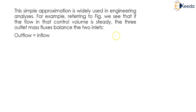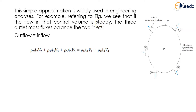This simple approximation is widely used in engineering analysis. For example, referring to the figure, if the flow in the control volume is steady, the three outlet mass fluxes balance the two inlets — that is, outflow equals inflow. At sections 2, 3, and 5 we have the outlets, while at sections 1 and 4 we have the inlets.